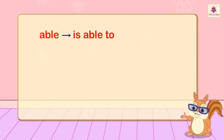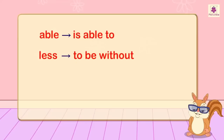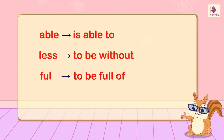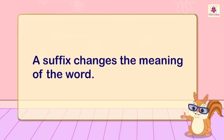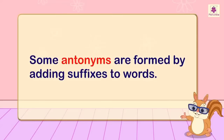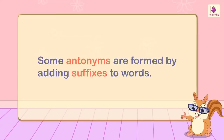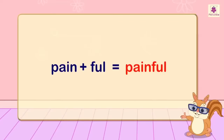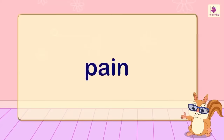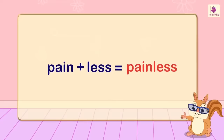-able means 'is able to'; -less means 'to be without'; -ful means 'to be full of'; -er means 'one who.' A suffix changes the meaning of the word. Some antonyms are formed by adding suffixes to words. For example: pain plus -ful equals painful, and pain plus -less equals painless.